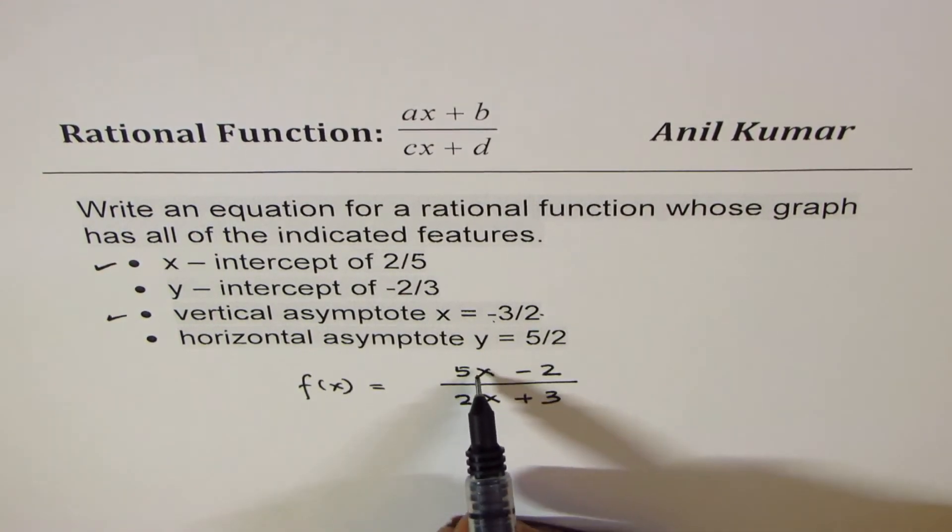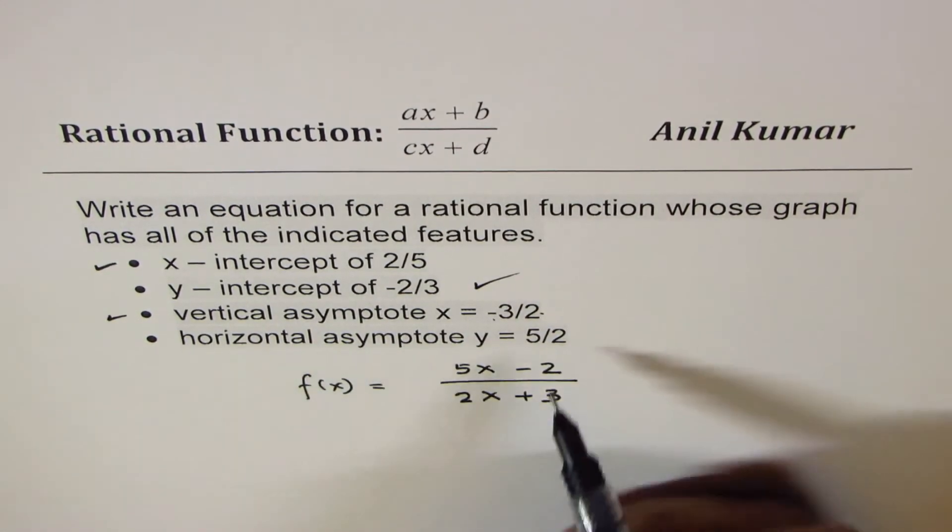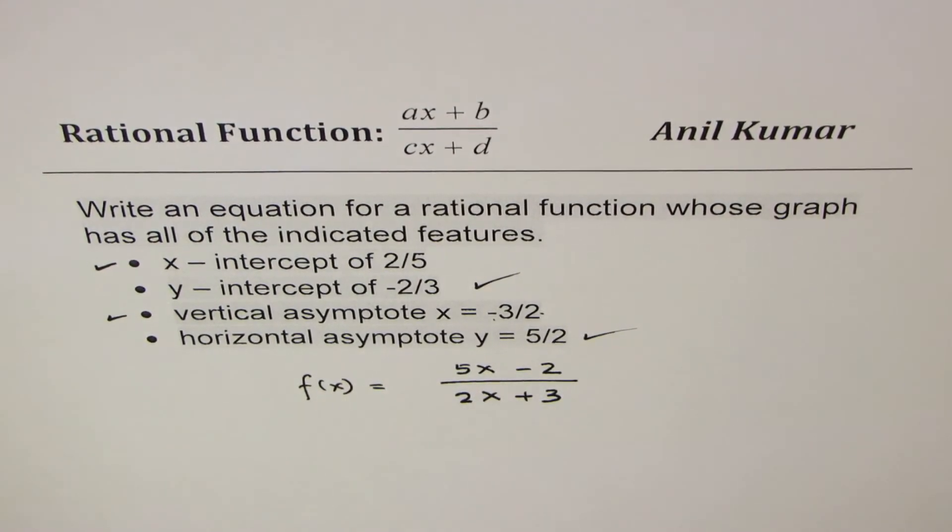Now it is a matter of checking. If I substitute x equals to 0, minus 2 over 3 is my y-intercept. So I check that. And horizontal asymptote is ratio of 5 and 2, which is right there. And therefore, that is our answer.